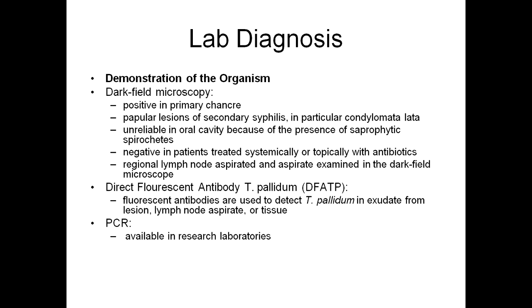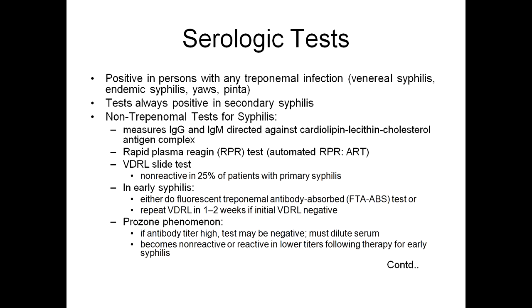Another test is the direct fluorescent antibody Treponema pallidum test, where fluorescent antibodies are used to detect the spirochete in exudate from lesions, lymph node aspirate, or tissue. PCR is also available.